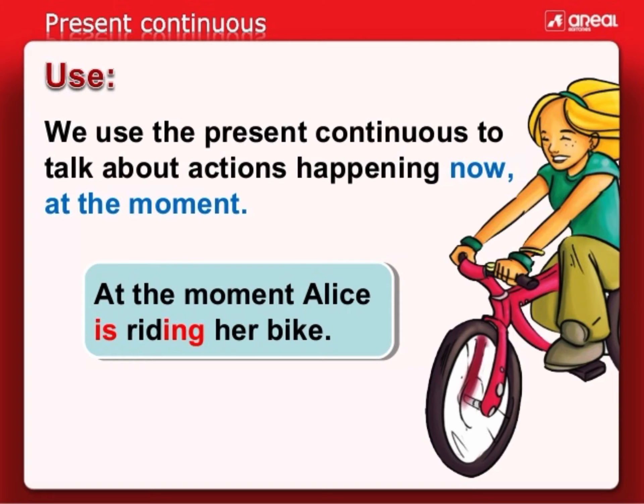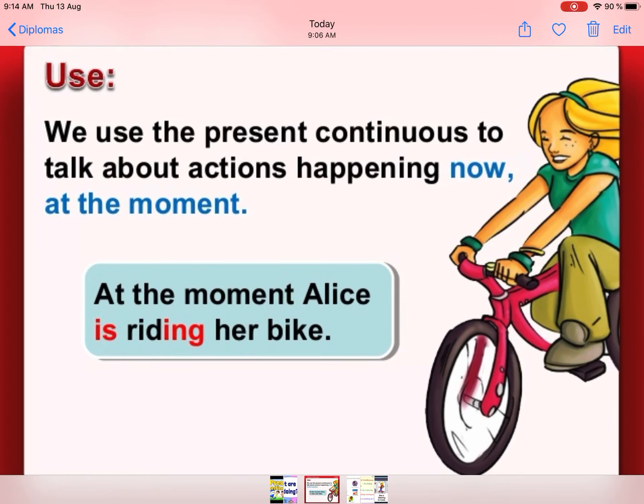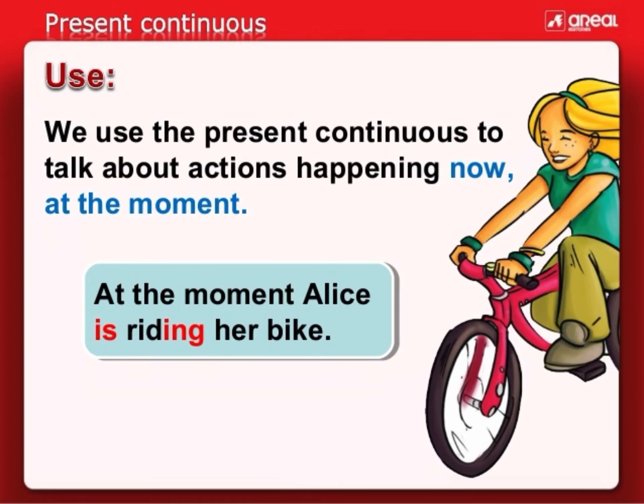For example, as you can see in this picture, we have Alice. And we have this example: at the moment, Alice is riding her bike. En este momento, Alice está manejando su bicicleta, ¿vale?